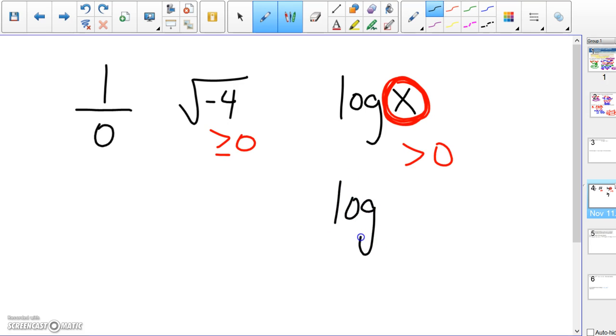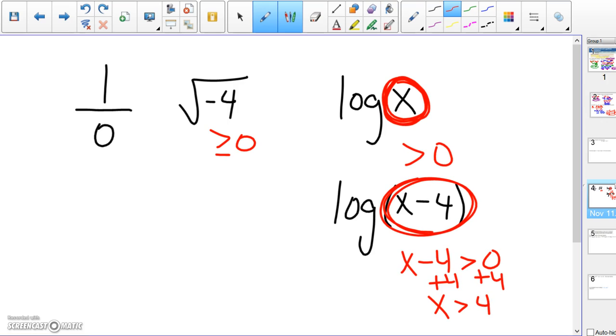So if you see log of x minus four, then you would say this argument has to be greater than zero, so if you add four, x is going to have to be greater than four. So when we do the domain, if it's greater than four, it's going from four to positive infinity. That would be the domain.